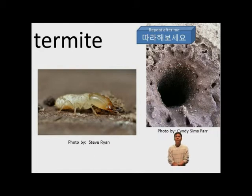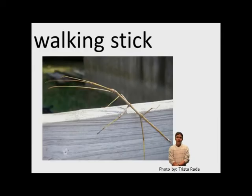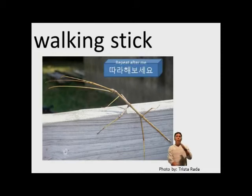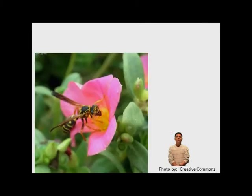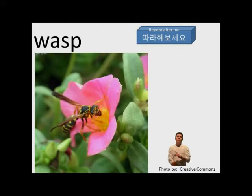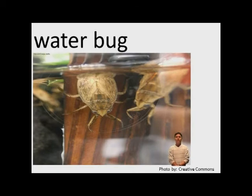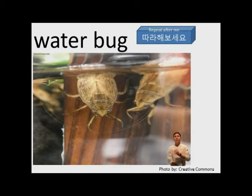Termite likes wood, it likes wood. We have a walking stick. Walking stick. One more time. Walking stick. We have the wasp. Wasp. One more time. Wasp. Next we have a water bug. Water bug. One more time. Water bug.